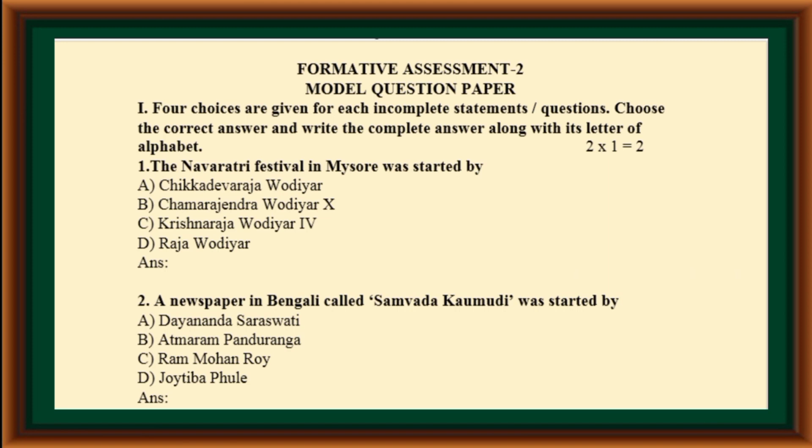The Navaratri festival in Mysore was started by: (a) Chikadeva Rajavadhyar, (b) Chama Rajendra Vadhyar, (c) Krishna Rajavadhyar 10th, (d) 4th Rajavadhyar. A newspaper in Bengali called Samwadha Komudi was started by: (a) Dayananda Saraswati, (b) Atmaram Panduranga, (c) Ramohan Rai, (d) Jyotipa Pule.